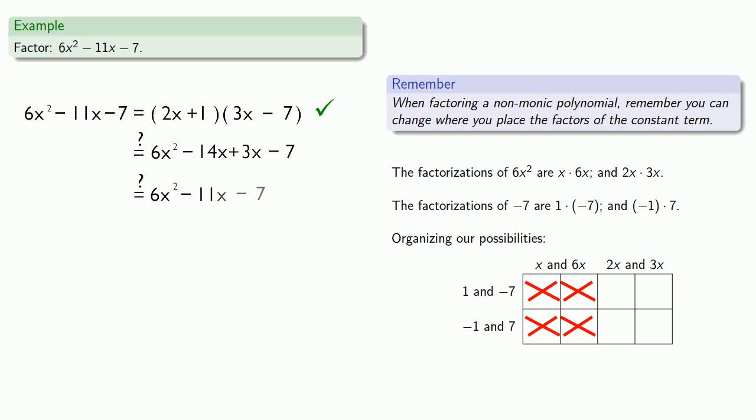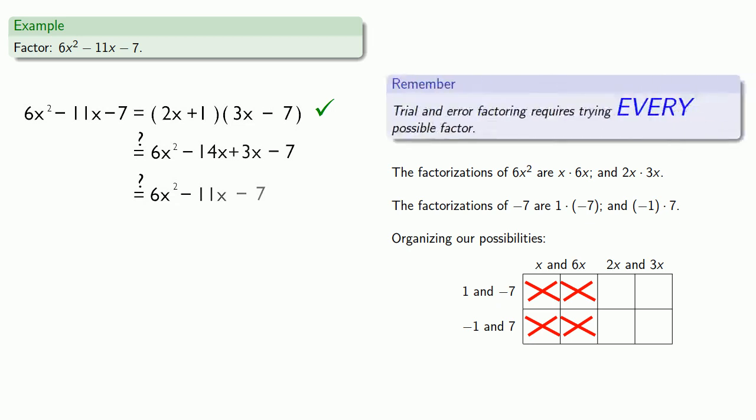So it's important to remember, trial and error factoring requires trying every possible factor. Patience and persistence is absolutely essential, and there is no substitute.